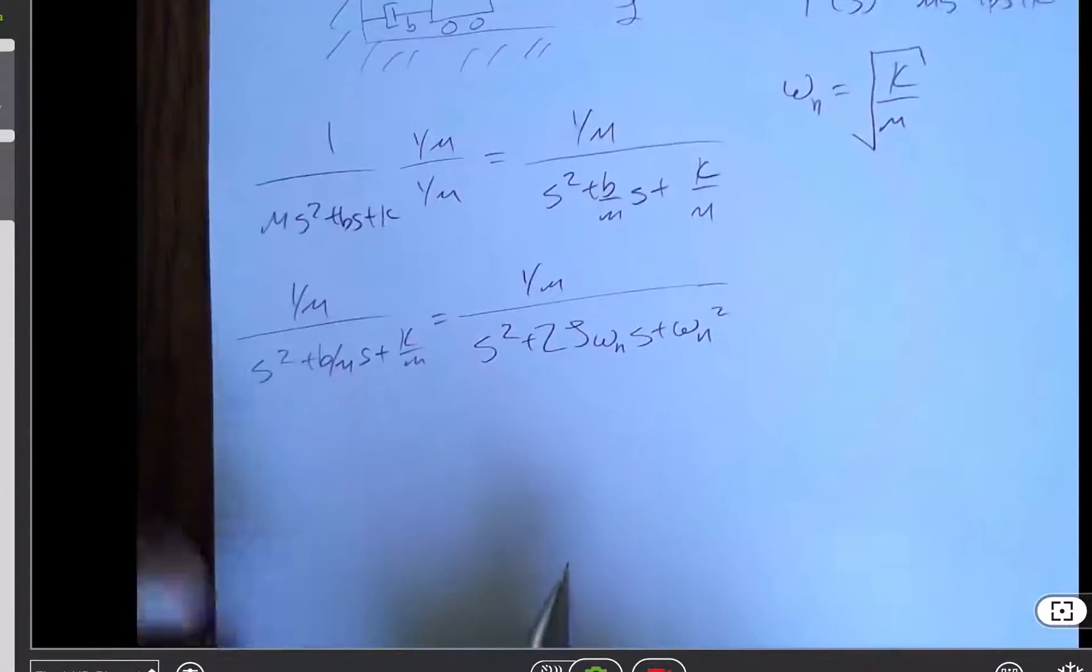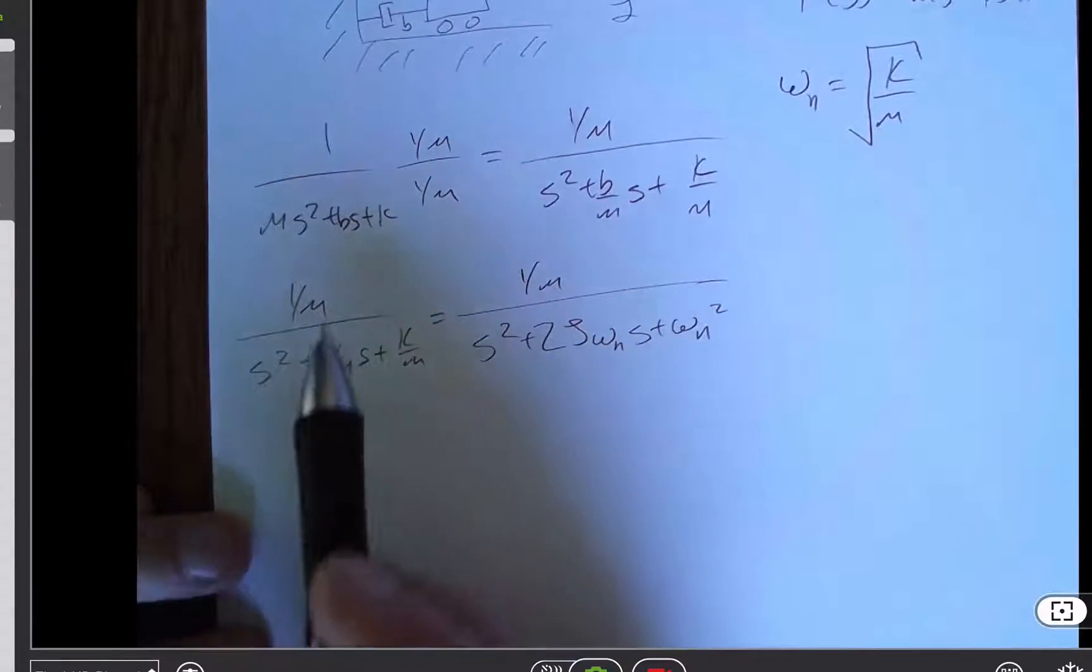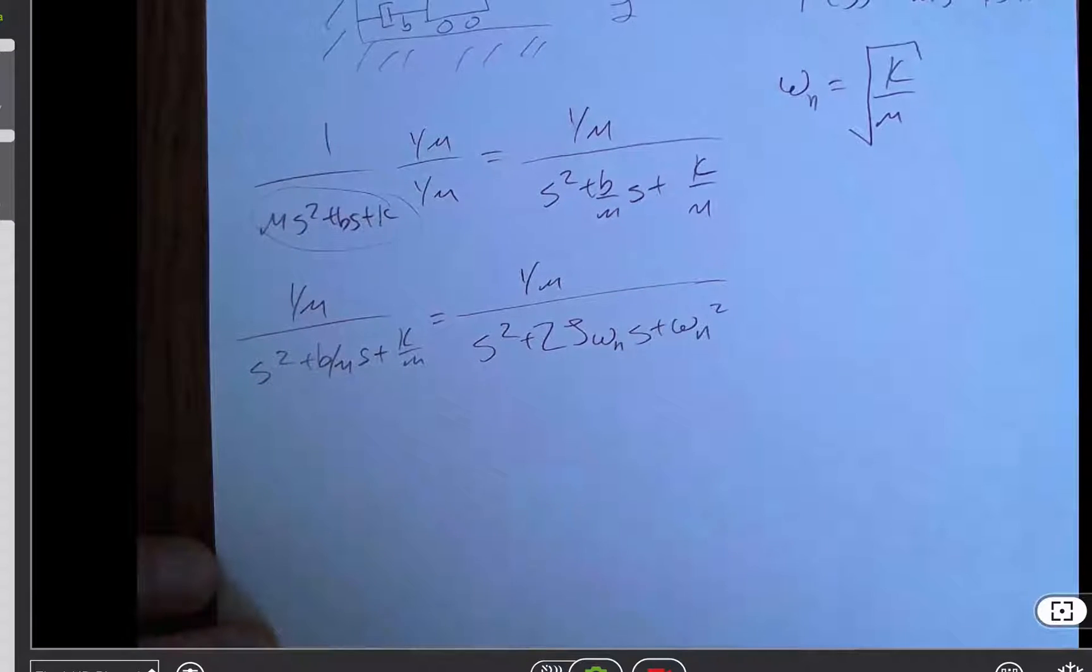So I want to talk about how do I know that this and that are the same. One of the things that happens, it comes back to what are the roots or the poles of this transfer function, what are the roots of the denominator.